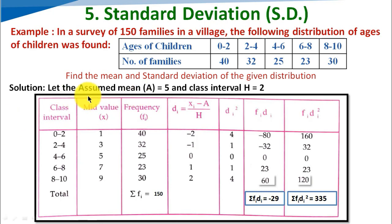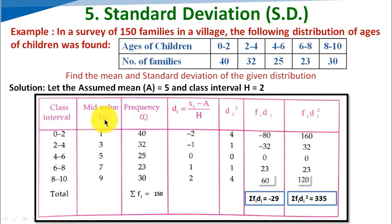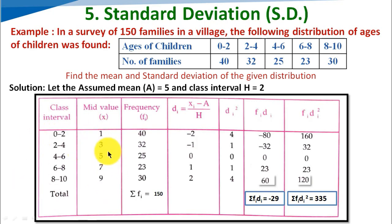First we set up the class intervals: 0 to 2, 2 to 4, 4 to 6, 6 to 8, and 8 to 10. Then we find the midpoint values: the midpoint of 0 to 2 is 1, then 3, 5, 7, 9. We take the assumed mean as 5, and the class interval h equals 2.